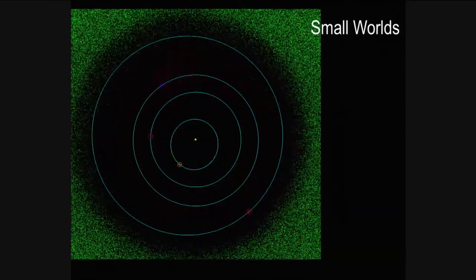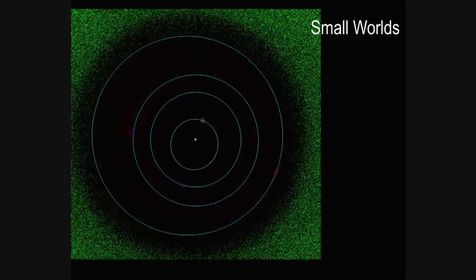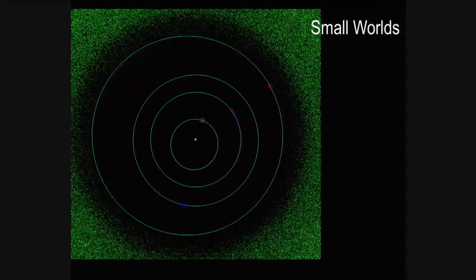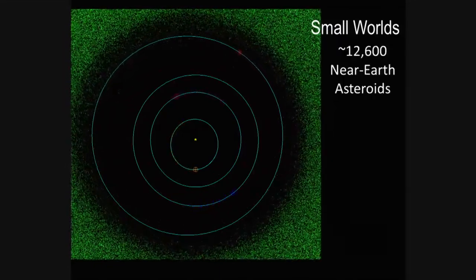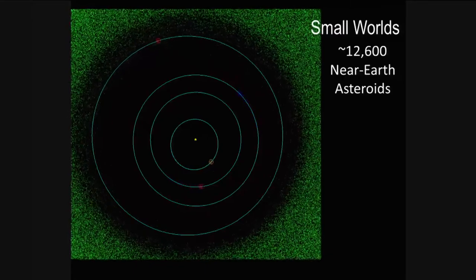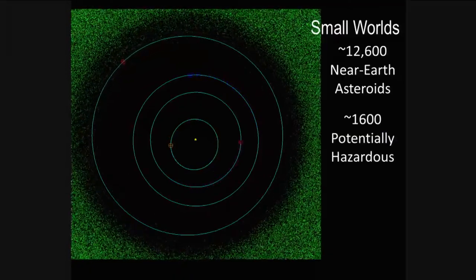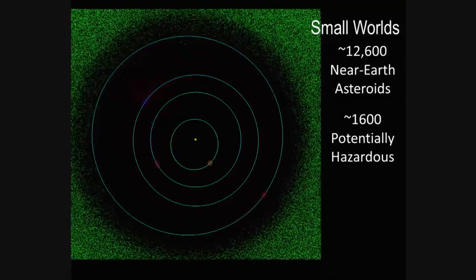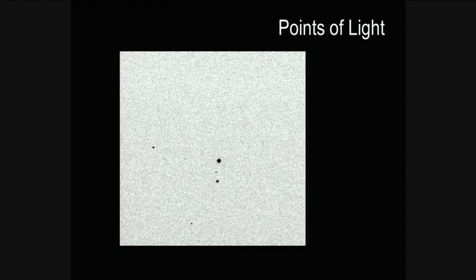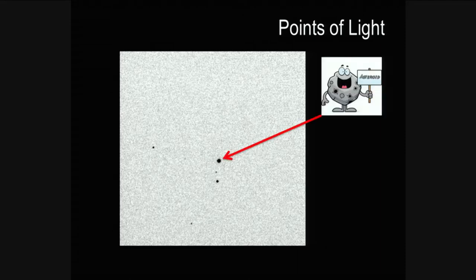If you zoom in and get closer, you can see these red dots — these are asteroids that come really close to the Earth, called near-Earth asteroids. There are roughly 13,000 of them, and these are the ones you hear about in the news. About 1,600 of them are either too big or come too close and could be potentially hazardous. But if you look through a telescope, asteroids are just points of light — you cannot distinguish them. The word 'asteroid' itself means star-like, so unless it holds up a sign saying 'I am the asteroid,' it's pretty hard to find.